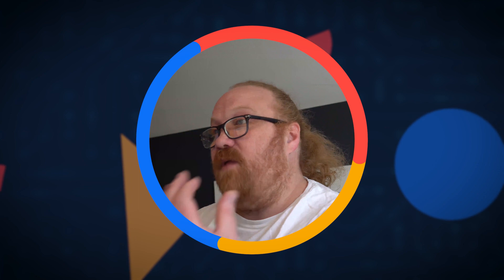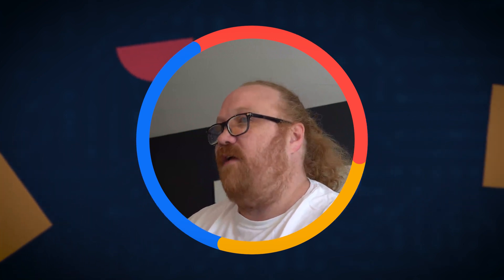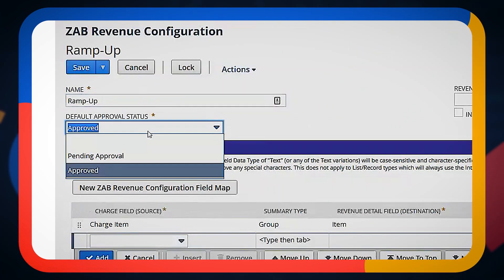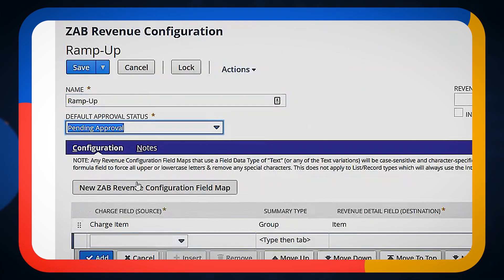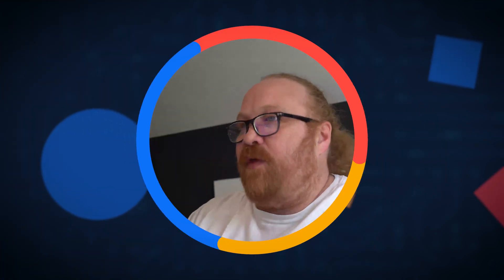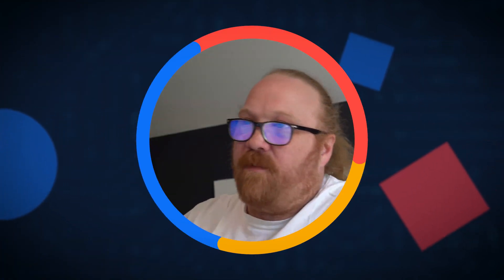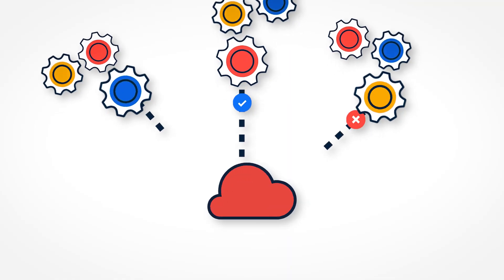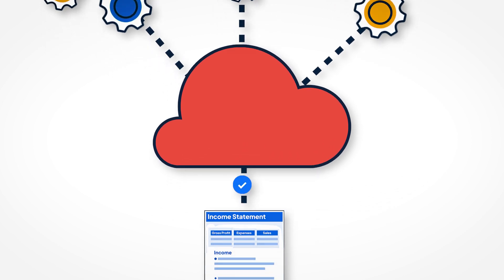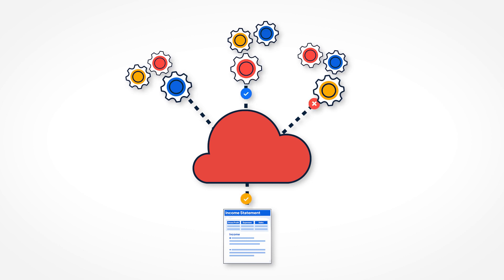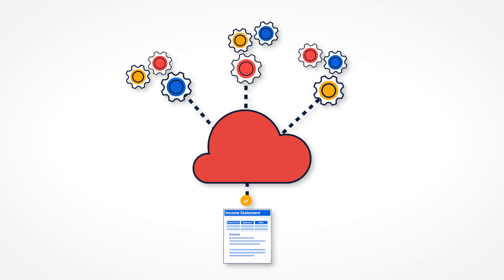If you want, you can insert — whether it's a script or a workflow — criteria to potentially flip certain things to Pending Approval, where you're inserting an approval process for some of the larger deals. It's rare in business that everything is 100% automated and requires no manual intervention. The more important thing about how to automate is where to automate and when to automate, making sure that you're not over-automating to the point where you're letting errors creep into your general ledger.